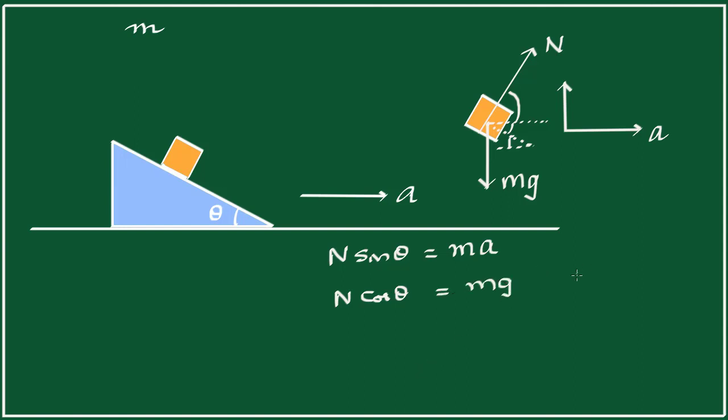So if I divide equation 1 by equation 2, we get tan theta is equal to a by g. And that tells us the acceleration required is g tan theta.